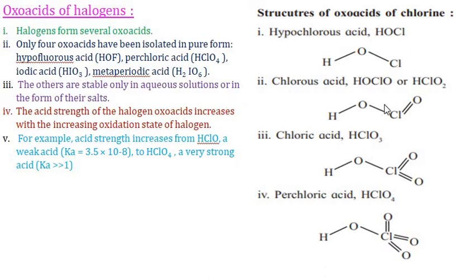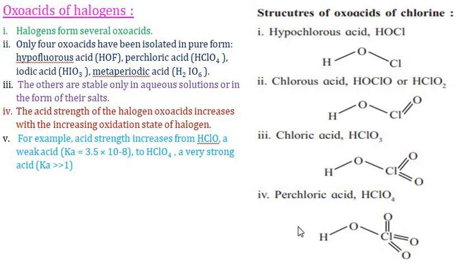The four oxoacids of chlorine are: hypochlorous acid (HClO), chlorous acid (HClO2), chloric acid (HClO3), and perchloric acid (HClO4). The hydrogen and chlorine remain the same across all four; only the number of oxygen atoms increases — from one in hypochlorous acid to four in perchloric acid.